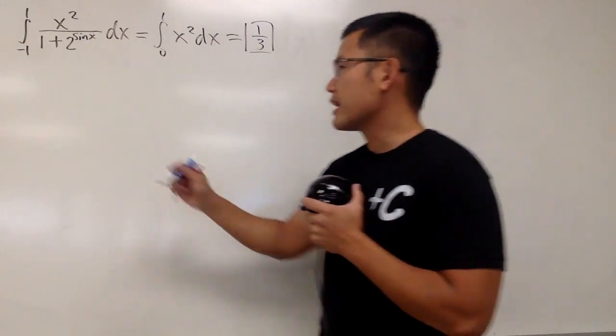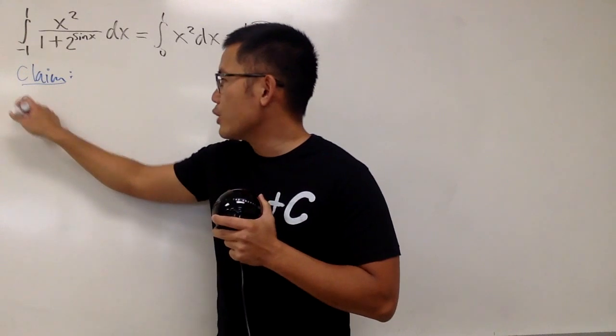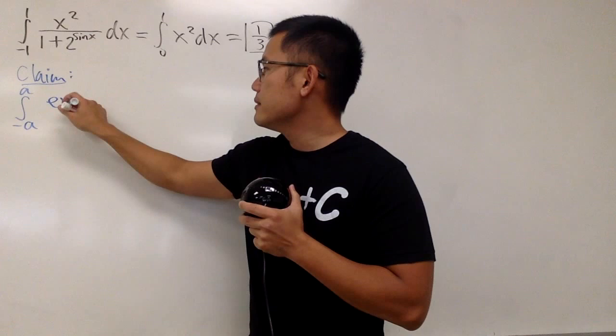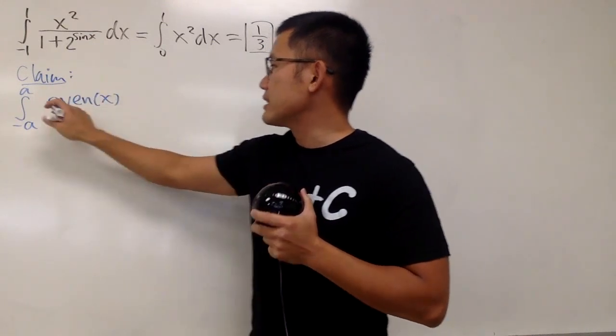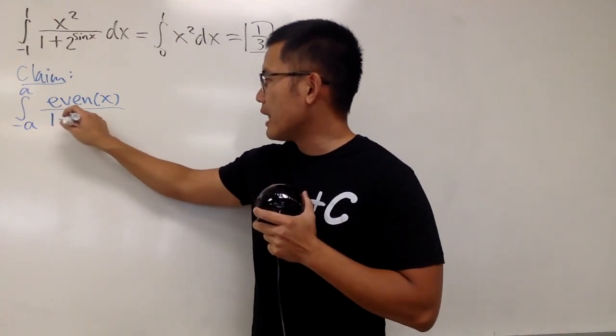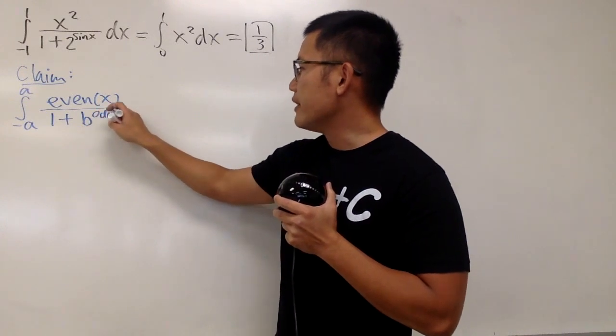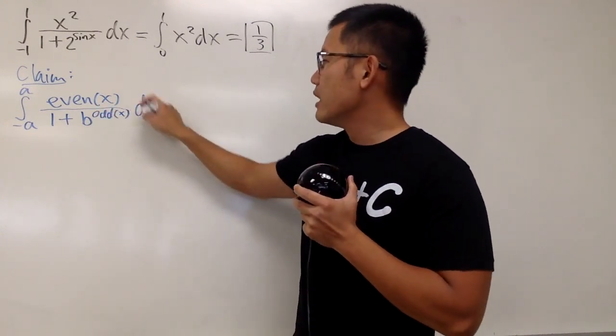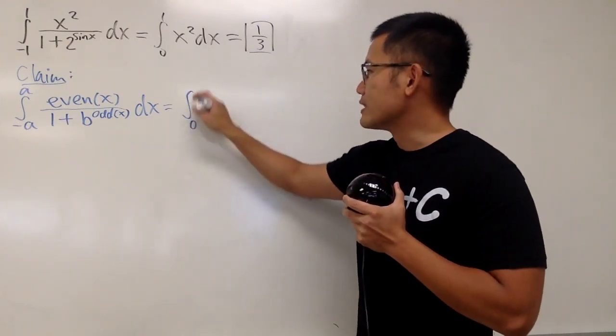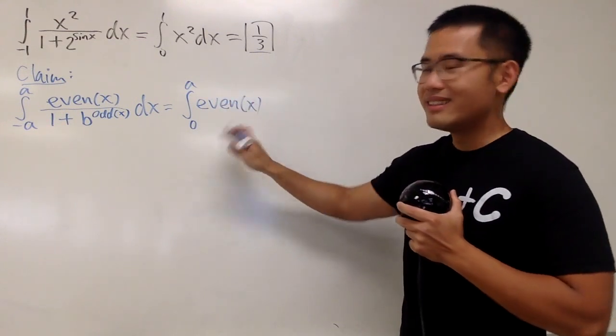Anyway, here is my claim for you guys. I claim that whenever we have the integral going from negative a to a, if the top is even, I'll just put on even of x to represent an even function, and then the bottom, if it's 1 plus some number, I'll just put on b for the number, and the power here, if it's an odd function power. Then, this integral is, in fact, the same as the integral going from 0 to a, and we have that even function only. That's all we have to integrate.